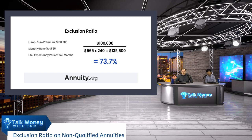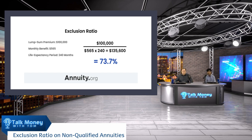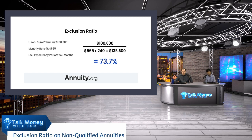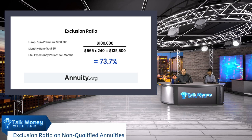Annuities are always considered ordinary income, so they're taxed at your ordinary income bracket and not capital gains. So annuities miss out on that nice capital gains tax rate — that's right.